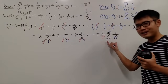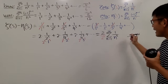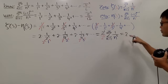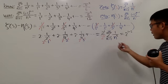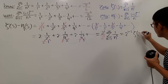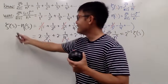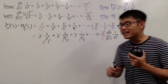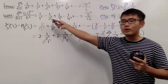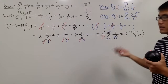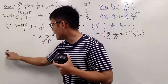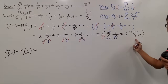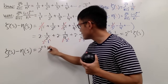That remaining sum is exactly the theta function! So we can write 2 over 2 to the s as 2 to the 1 minus s power, and the rest is theta of s. Therefore, theta of s minus eta of s equals 2 to the 1 minus s times theta of s. Pretty cool!